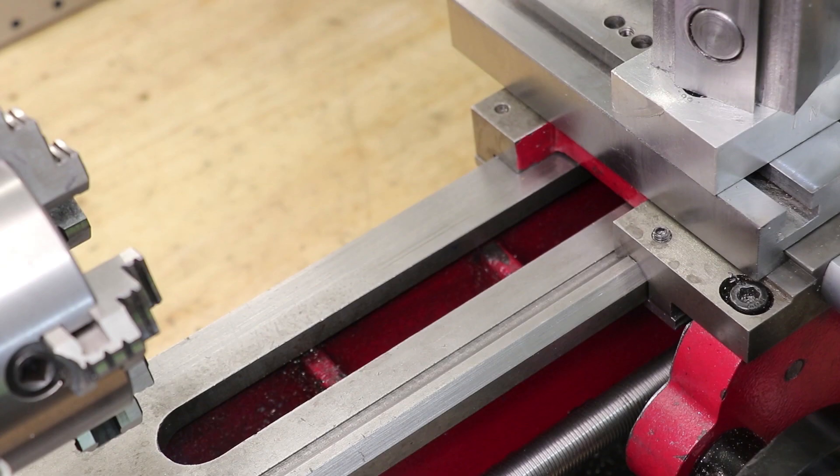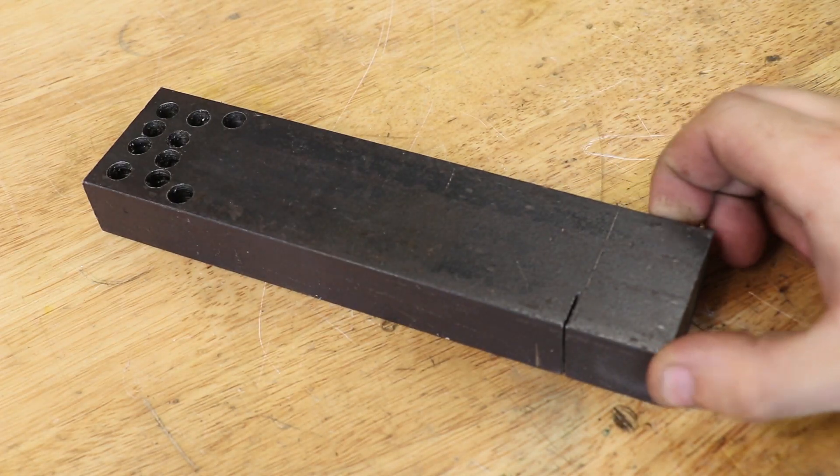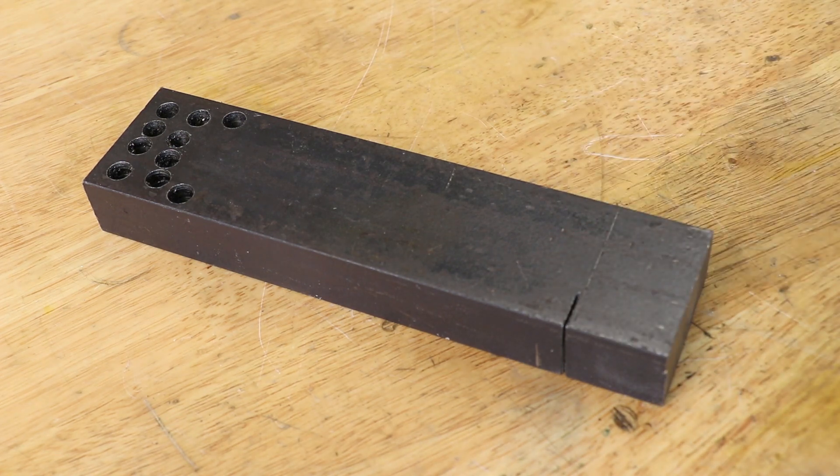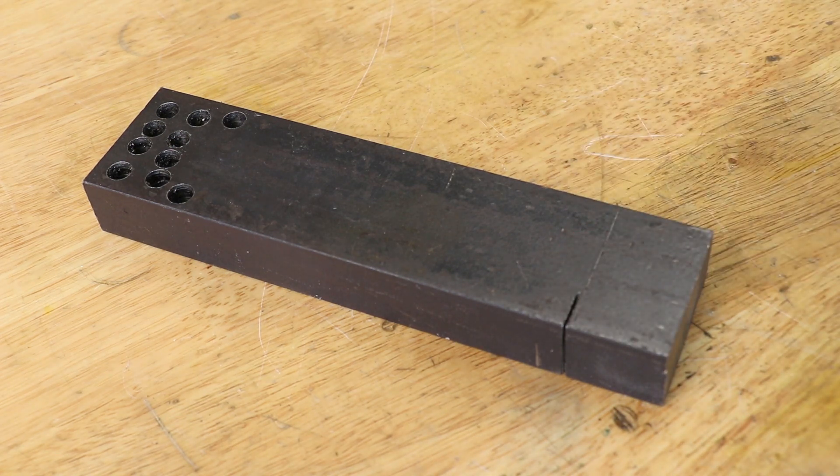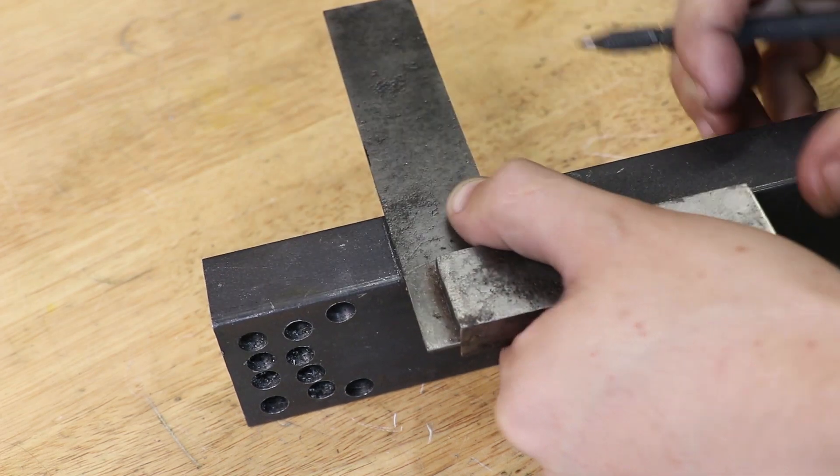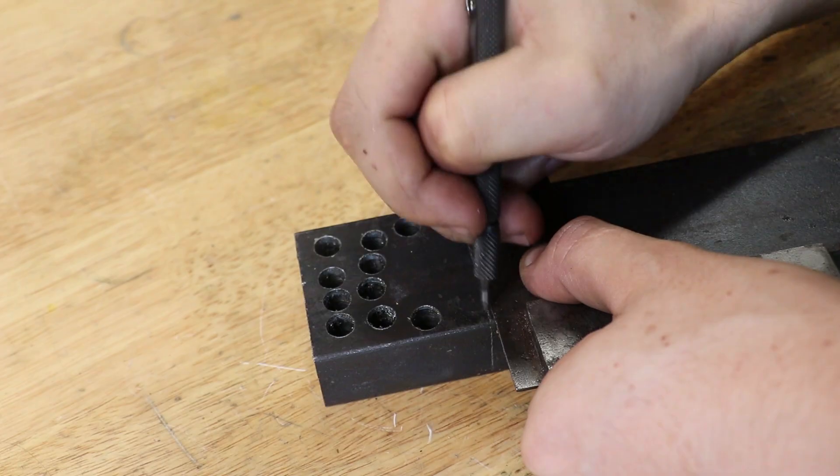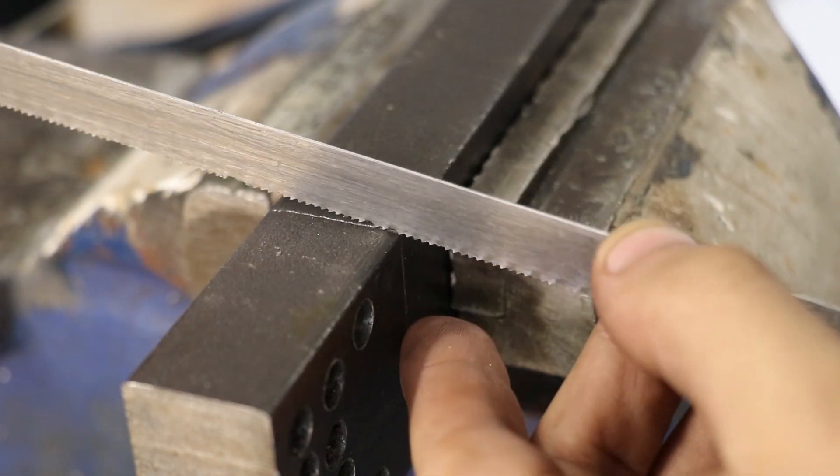Now to hold the cover in place I'll have to make some type of bracket. Now this might seem like overkill but I'm going to be using this scrap piece of 30 by 50 steel to make the bracket. There are some holes and a few partial cuts so I'll cut those away.